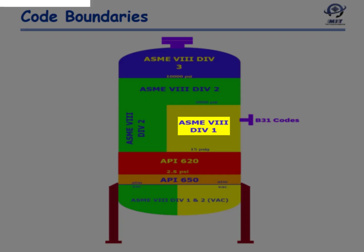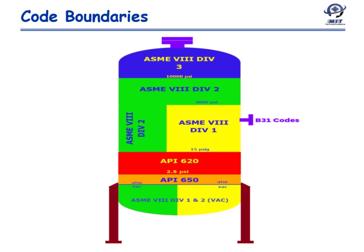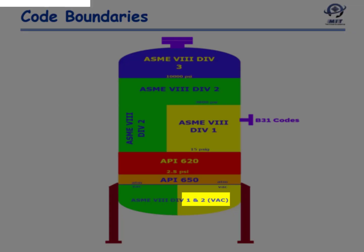Above 15 psi gauge and up to 3000 psi, Division 1 is shown in yellow. Division 1 can also be used above 3000 psi with additional rules, and the code does not give any higher limits for it. Division 1 vessels are also often designed for vacuum service, so the yellow color extends below the atmospheric pressure line as well.